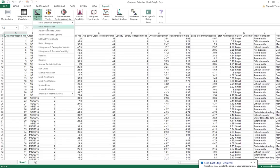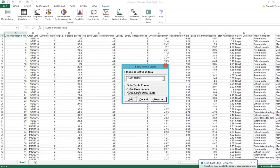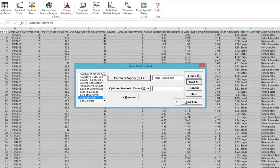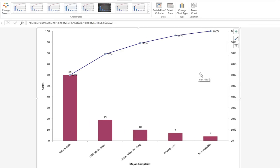For example, here's a demonstration of a basic Pareto chart used on customer satisfaction scores. This chart clearly demonstrates major complaints.